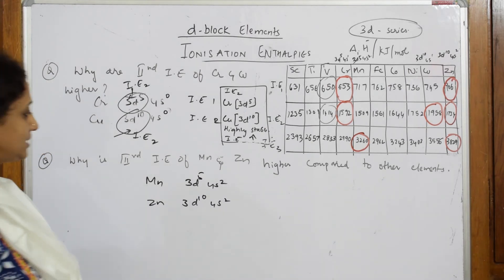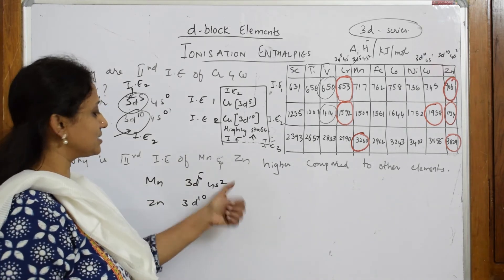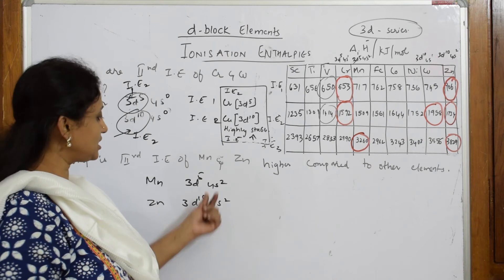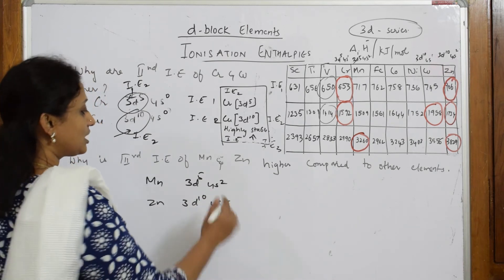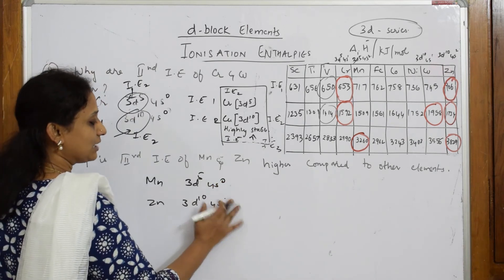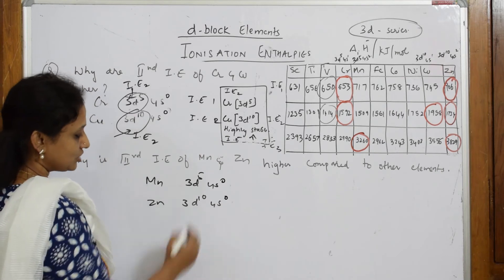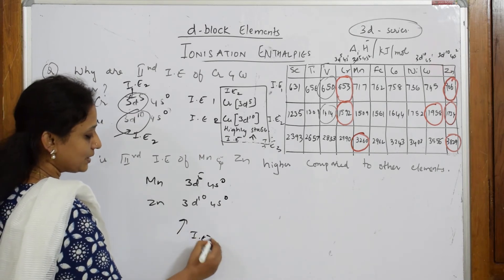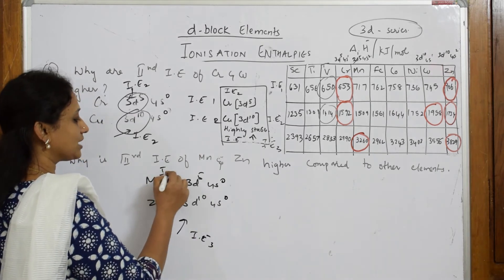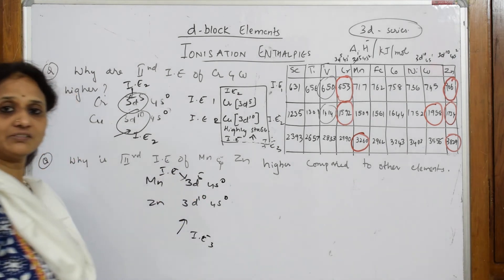Now what happened? Third they said. For first ionization enthalpy this goes, second ionization enthalpy this goes. So when you are applying the third ionization enthalpy, what are you left with? Your third ionization enthalpy has to remove electron again from the same 3d5 and 3d10.